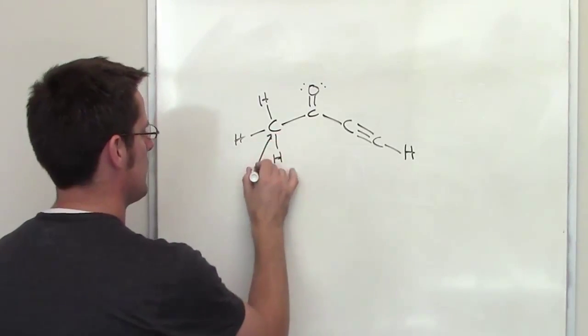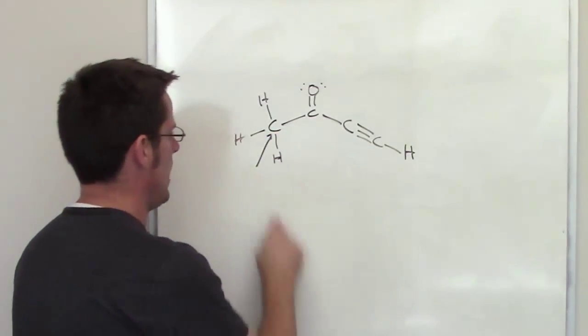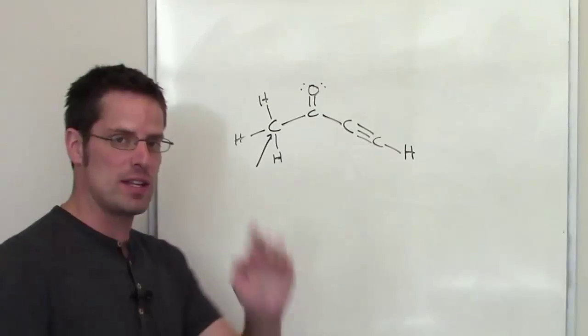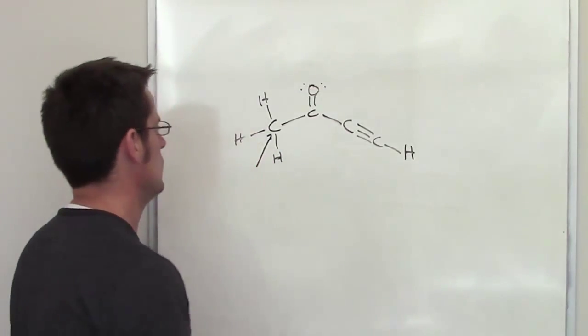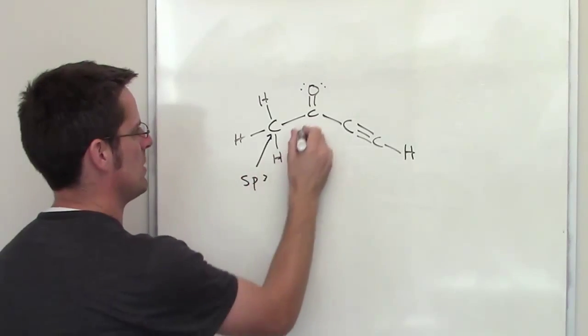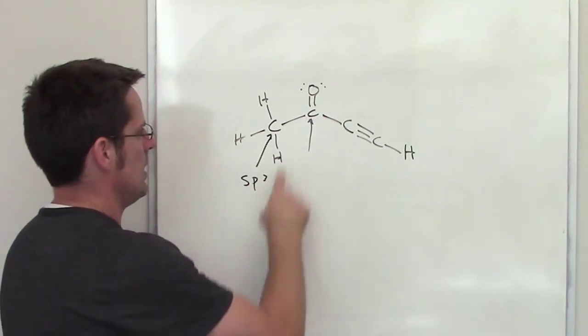Let's take a look at each one. This carbon right here has a hydrogen, a hydrogen, hydrogen, and a carbon around it. That's four things, so its hybridization is sp3. We'll write that down.